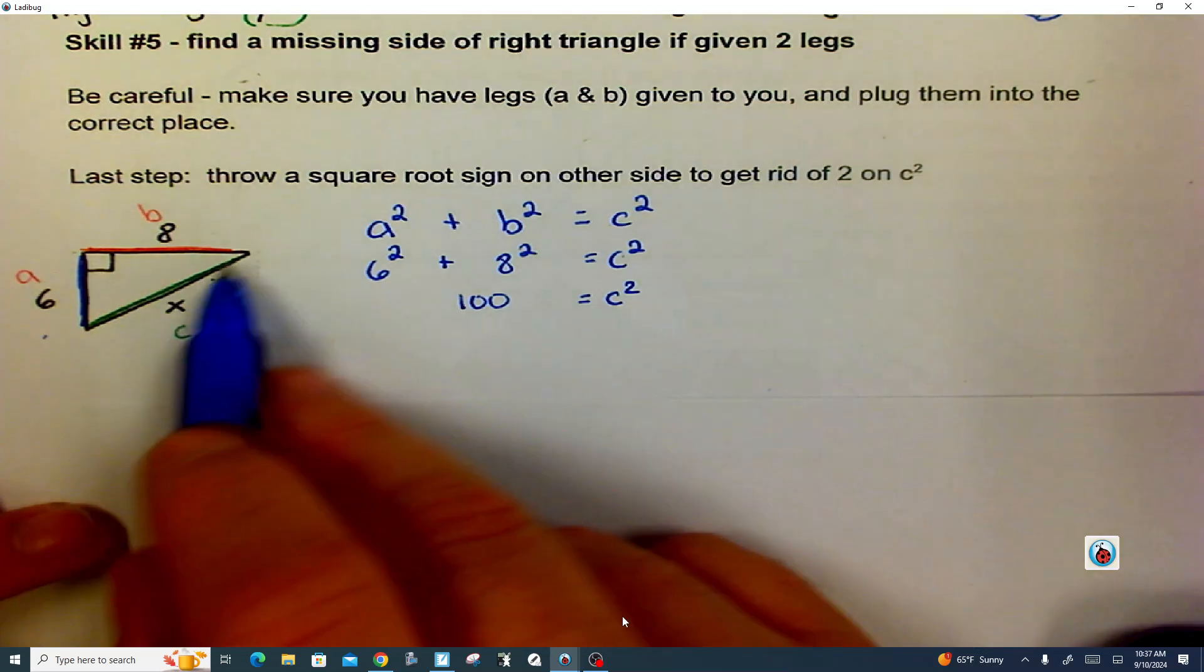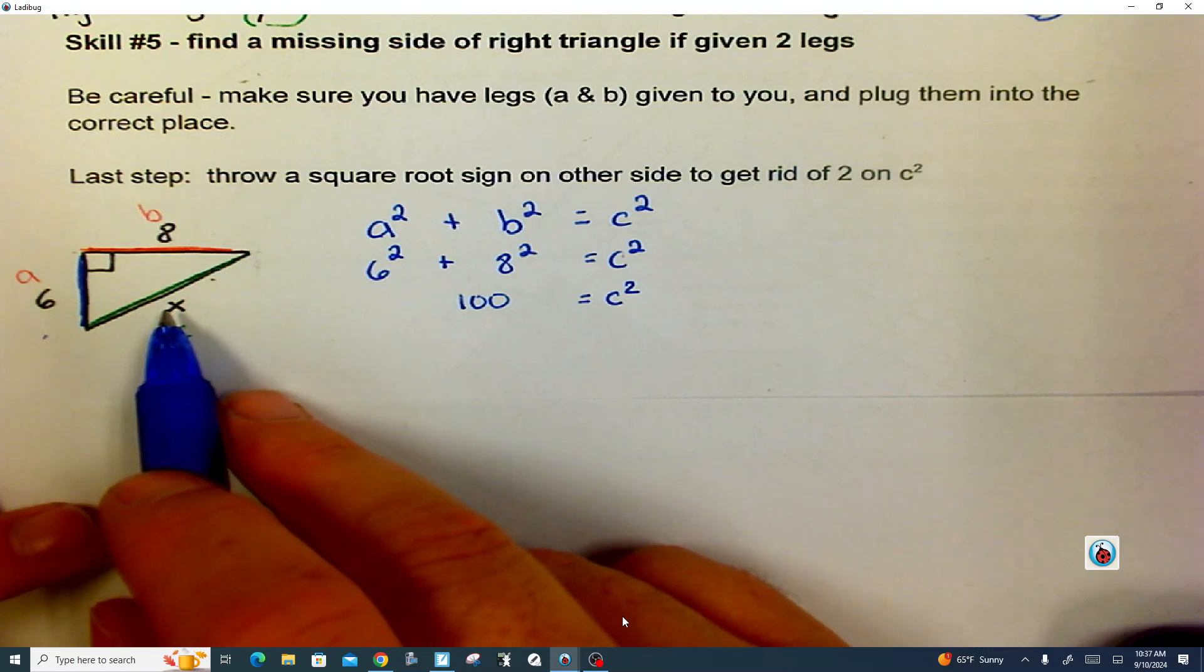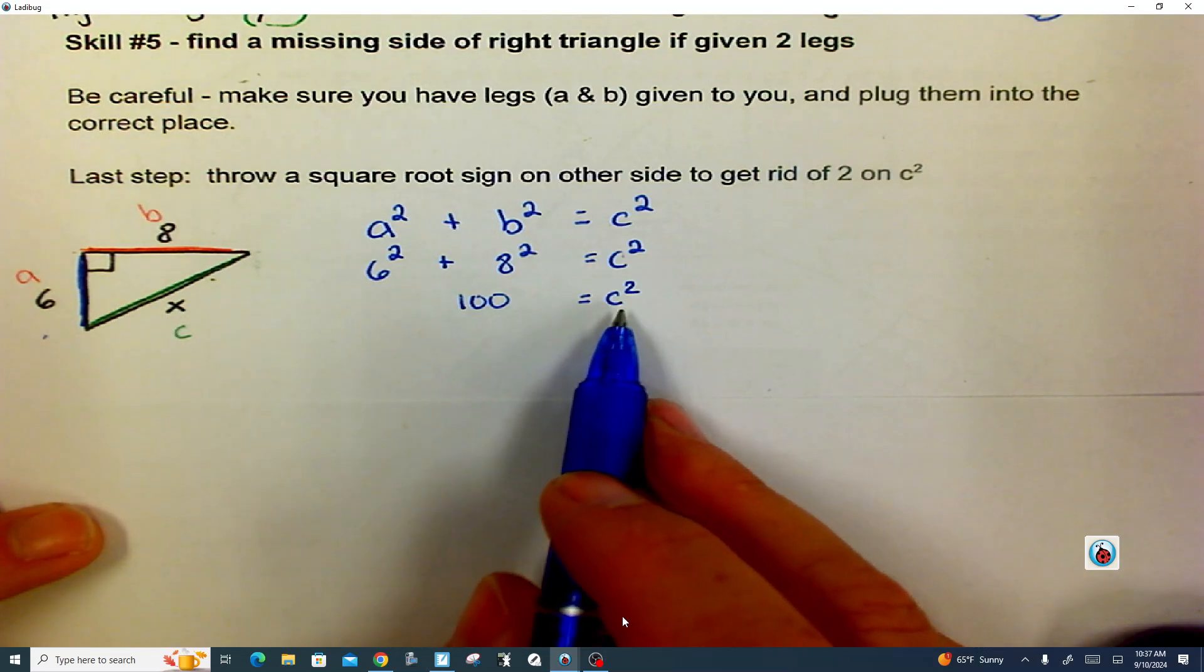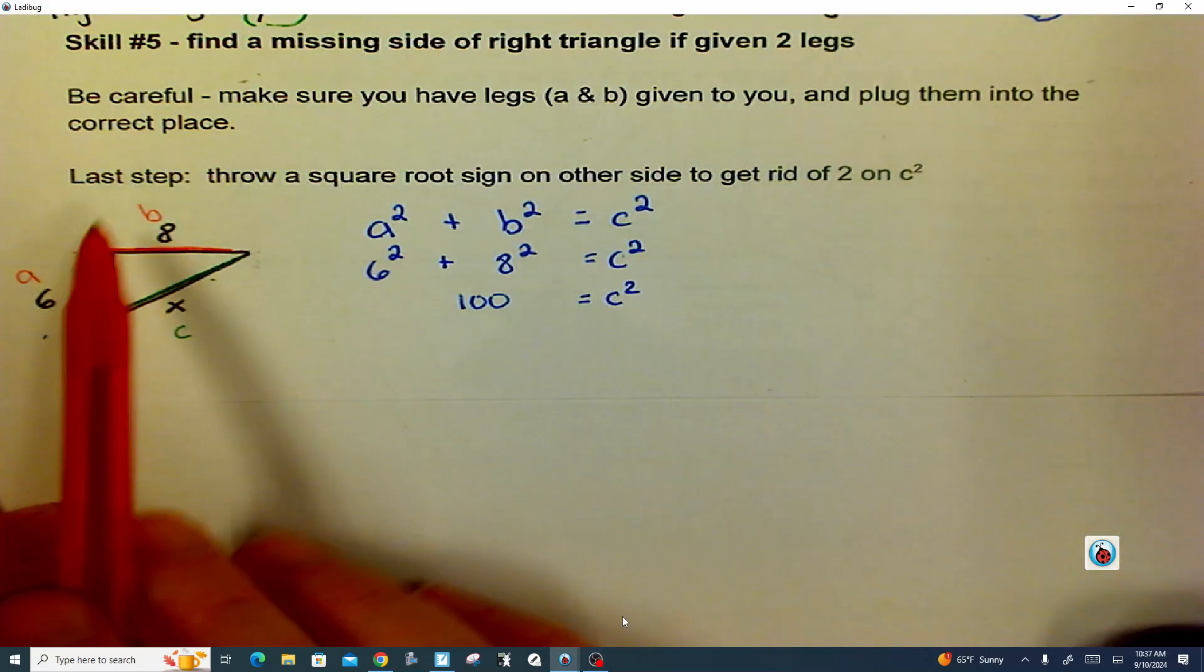Well, this side is not 100. 100 is definitely bigger than eight and six, but that seems a little extreme. Well, how do I get that square? How do I get the second power off of C? So this is what I'm trying to show you.